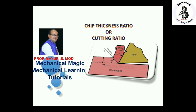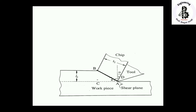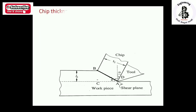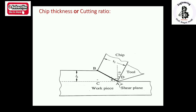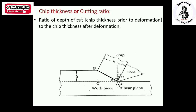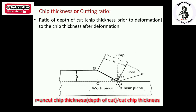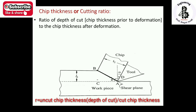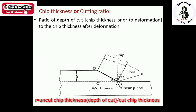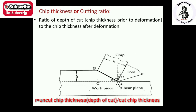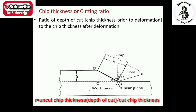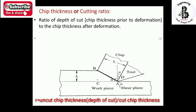In case of chip thickness ratio, it is the ratio of depth of cut — or chip thickness prior to deformation, before cutting — to the chip thickness after deformation. In simple terms: chip thickness before cutting and chip thickness after cutting.